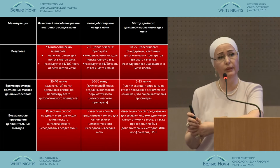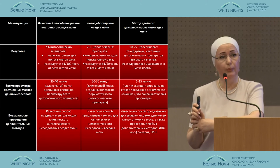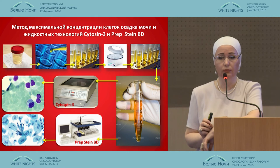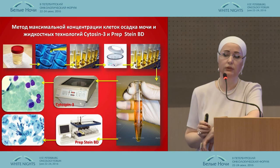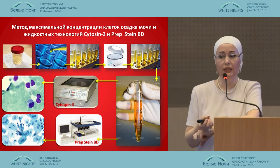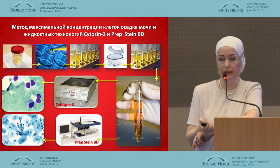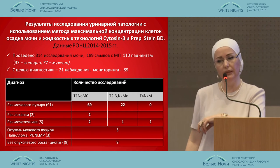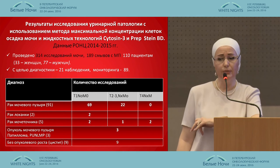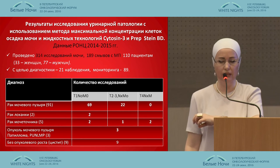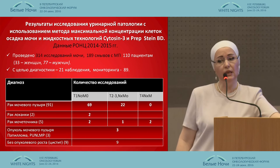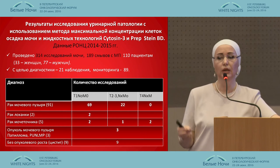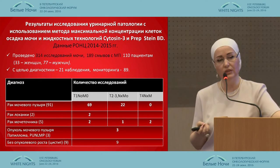The analysis of the microslides is very quick. There is a series of microslides which we can use for morphology and other methods. The methodology is as follows: urine is put into centrifugal glasses, then the residue is placed into one container, and then Cytospin-3 or Prepstain-BD is prepared. In 2014–2015, 314 urine analyses were conducted from 110 patients — 33 women and 77 men. For diagnostic purposes, 21 observations and 89 monitoring patients.